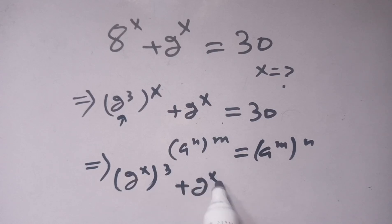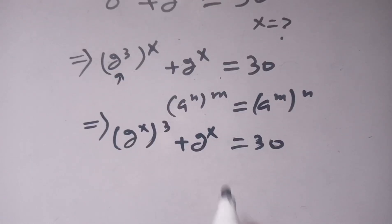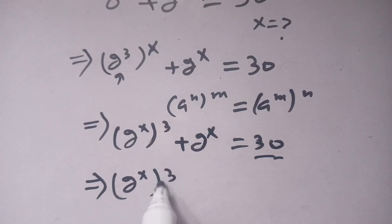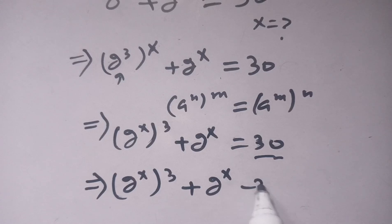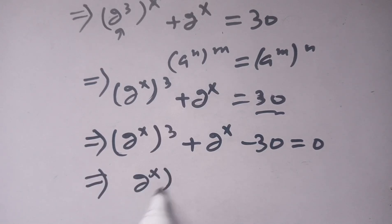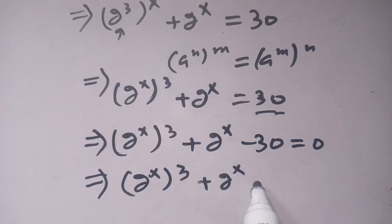This equals 30. In the next step we shift the 30 from the right hand side to the left hand side, so our equation becomes 2 to the power x, bracket to the power 3, plus 2 to the power x minus 30, is equal to 0.